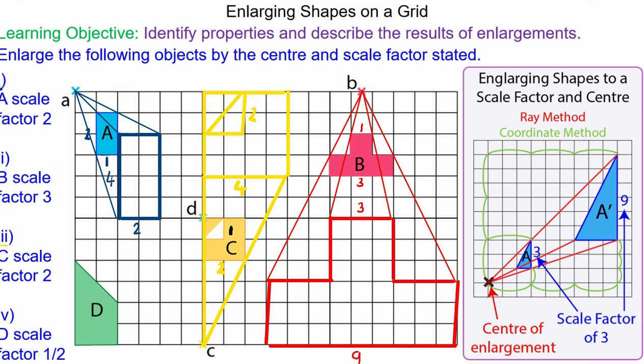Moving on to question D. We're going to make the image half the size of the original because the scale factor is half. So we draw our rays and the distance from the center to the vertex is 2, 4, 6 and 2 down.